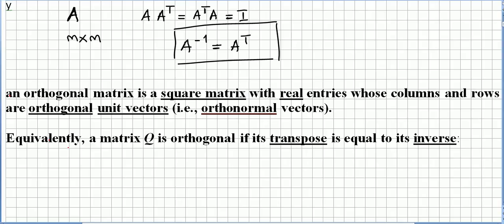Equivalently, a matrix Q is orthogonal if its transpose is equal to its inverse. Usually instead of the letter A, we use the letter Q for orthogonal matrices. This is the usual notation.